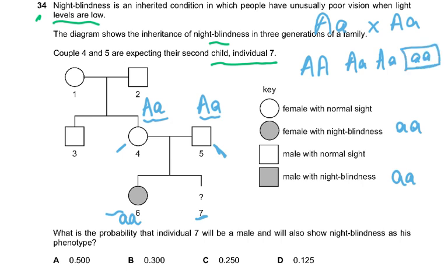There is a 25% chance of night blindness and a 50% chance of being male. So 50% of 25% gives a probability of 0.125.